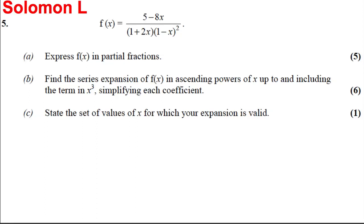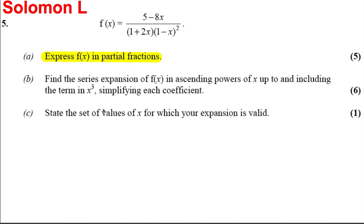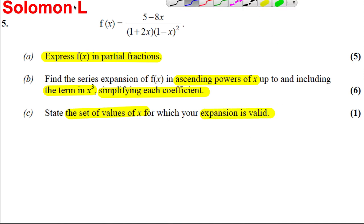Now we're trying a question about partial fractions where it links into the binomial theorem, and not integration as we've done previously. We've got a function f(x). We're asked to express it in partial fractions for five marks, then use the binomial in ascending powers of x up to and including the x cubed term, simplifying each coefficient. We're also going to state the set of values of x for which the expansion is valid. Let's do part a.